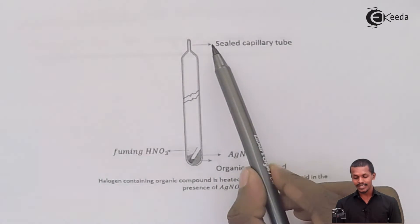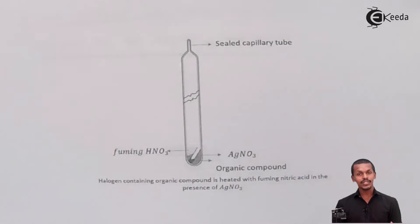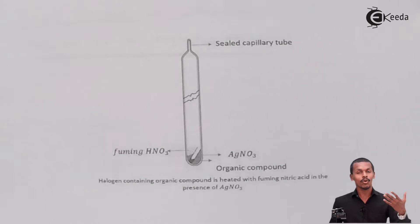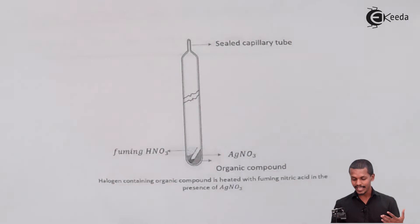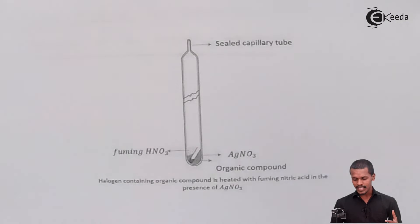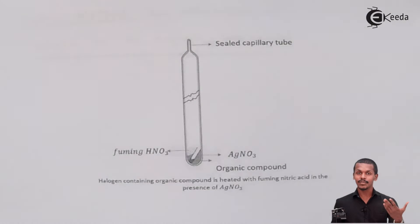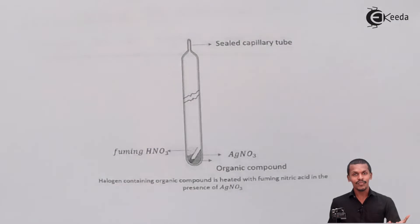This capillary tube is now sealed. Because fuming HNO₃ is present in the tube, the carbon and hydrogen in the organic compound are converted into CO₂ and H₂O respectively. The halogen atom present in the organic compound reacts with AgNO₃ to form AgX — silver halide. Silver halide, such as silver chloride, silver bromide, and silver iodide, is insoluble in water, so it forms a precipitate. That precipitate is collected, purified, and we weigh the amount of silver halide produced.